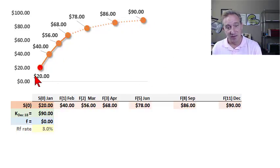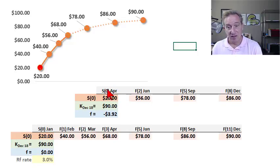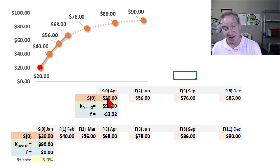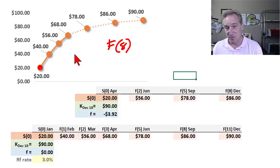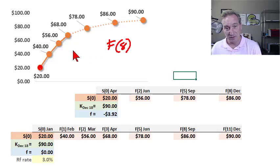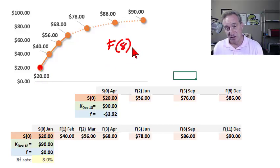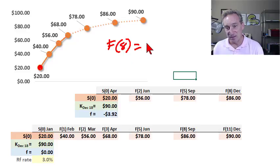In January we entered that contract. Now imagine going forward three months to April. We're still long that contract with a delivery price of $90 for December. But now the December contract is an eight-month contract. I'll make an important assumption of a static forward curve — as we go forward in time, the forward curve doesn't twist or shift up or down. So the spot price is still $20, and the December futures price would now be $86. We can visualize this as sliding down the forward curve.